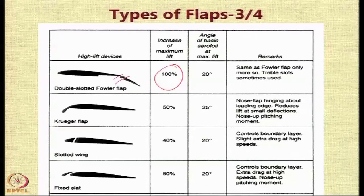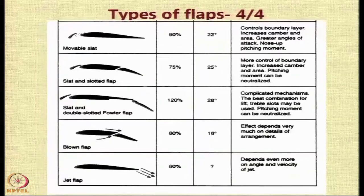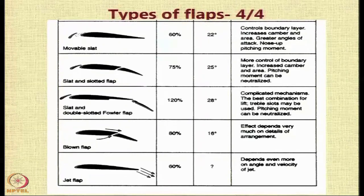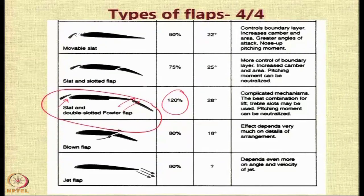Let us now look at some leading edge devices. Using a Kruger flap — basically a flat curved plate with a rounded leading edge — you can get 50%. Putting a slot gives 40%, and a fixed slat with a gap in between can give around 50% increase. As you increase the complexity of the system you get more benefits. For example, a configuration with a slat and a double slotted Fowler flap can give around 120% increase in the lift coefficient.